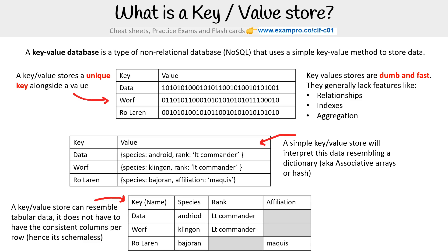When you look at a key-value store, it looks like a table, but it's not actually a table — it's schema-less, because underneath it's really just that associative array. That's why you could have rows that have different amounts of columns. Due to the design, they're able to scale very well beyond a relational database, and they can kind of work like a relational database without all the bells and whistles.